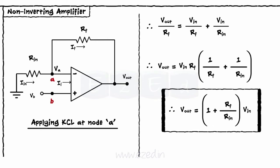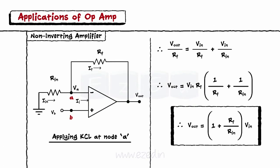Here, 1 plus r-f upon r-in acts as a gain and as there is no inversion of signal, this amplifier is called as a non-inverting amplifier.